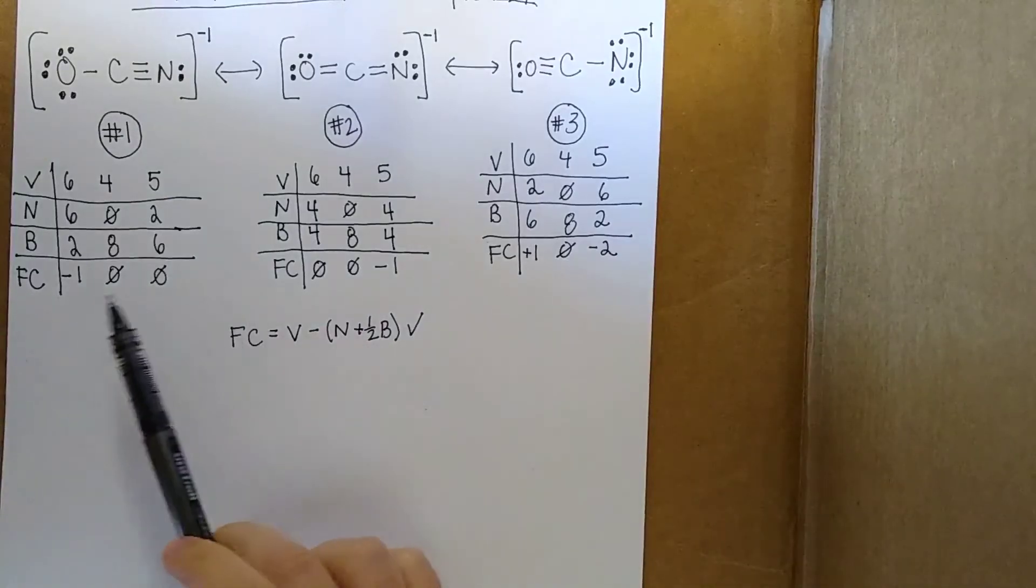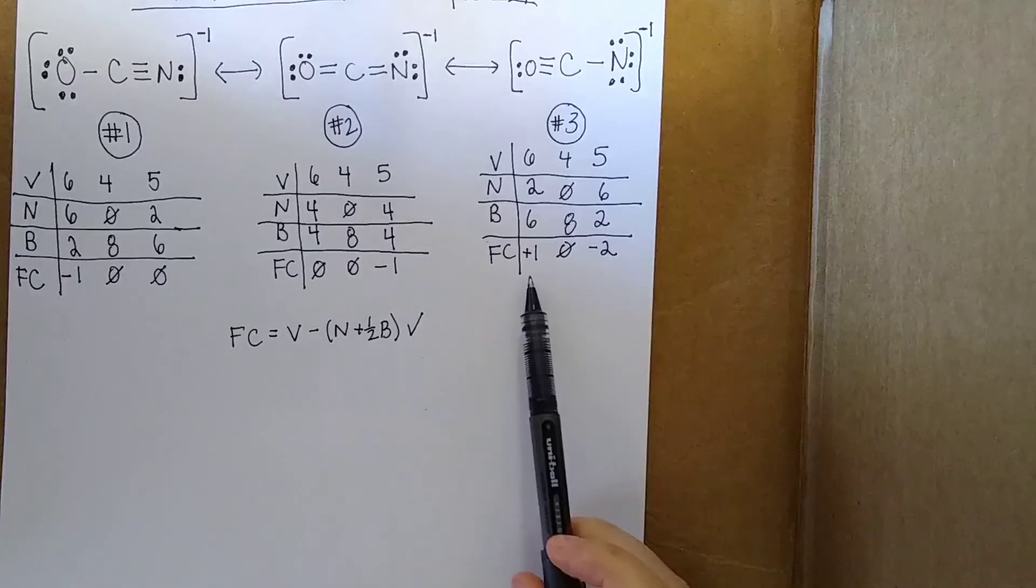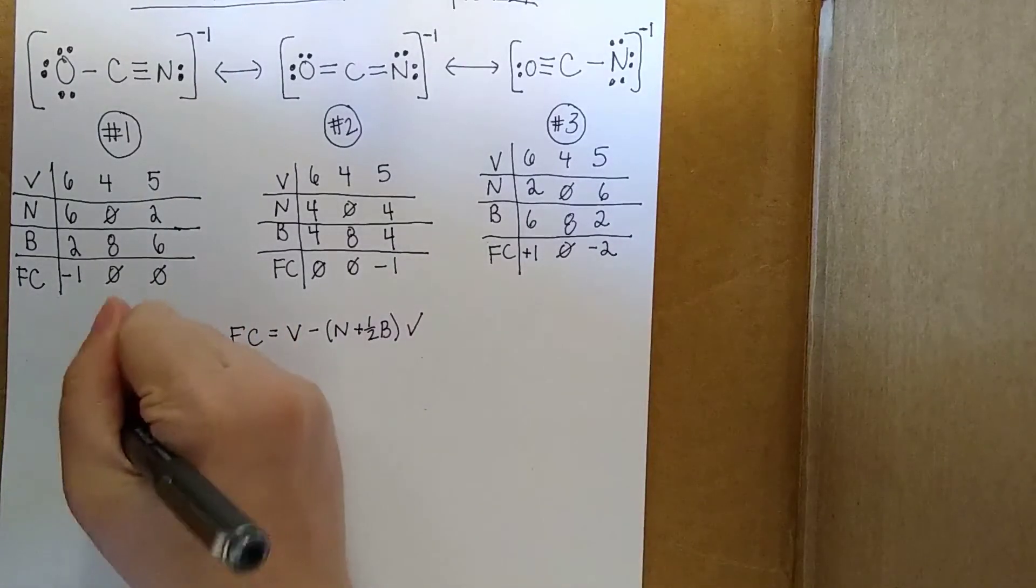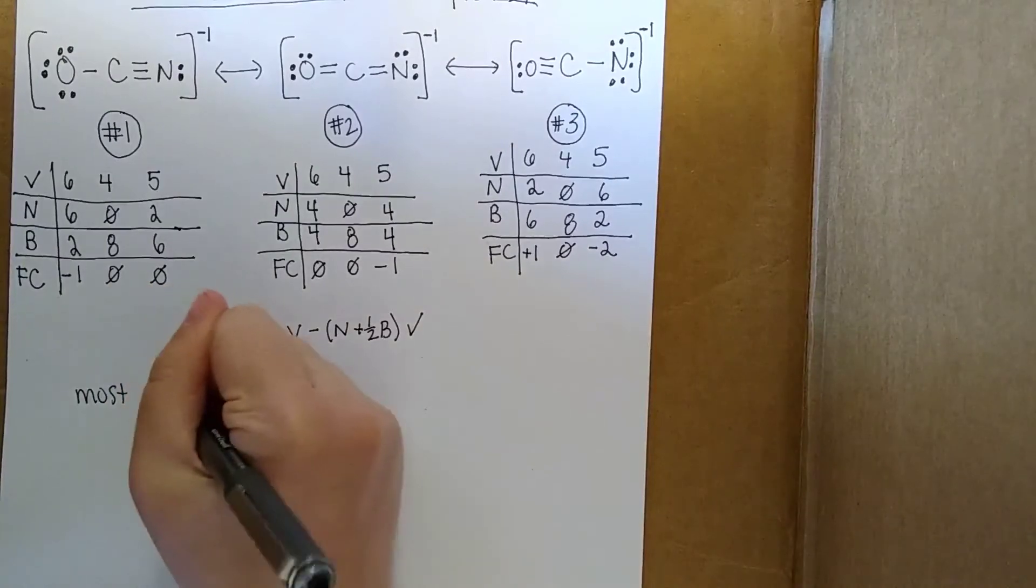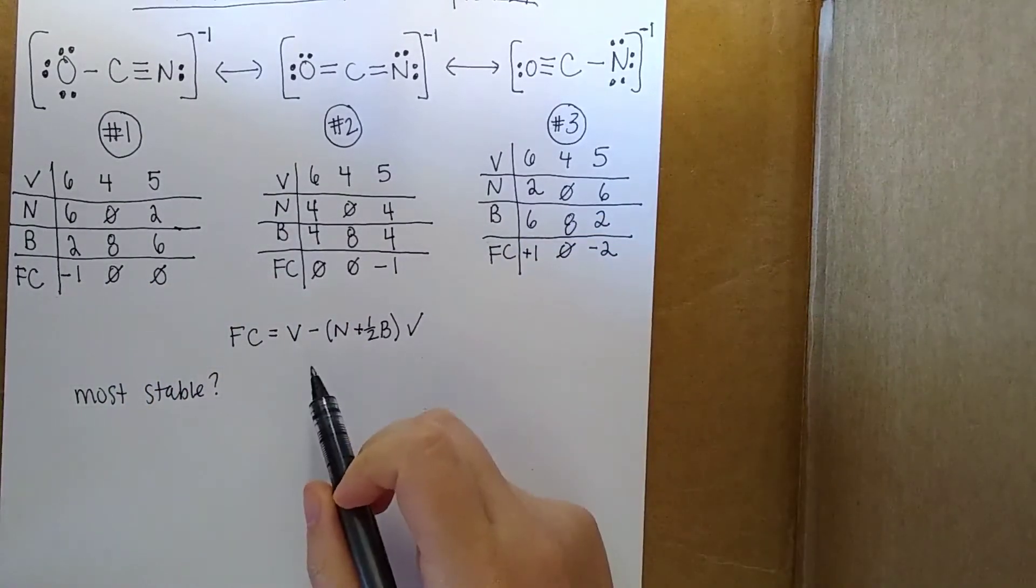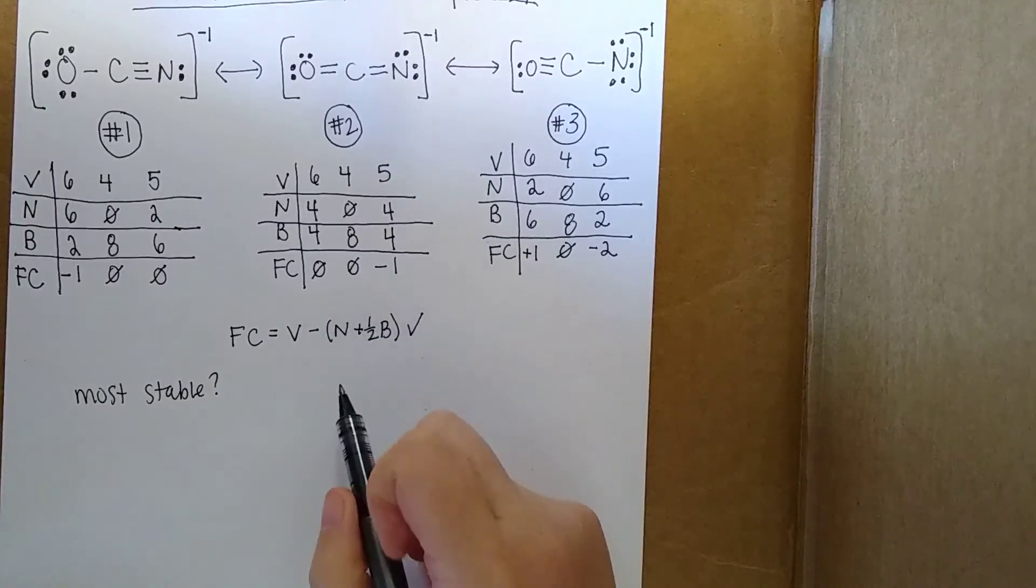We've computed the formal charges for all of the atoms and all of these resonance structures. We have to go back to our rules to determine which one is the most stable. Remember that molecules with the least amount of formal charge in general are the most stable.